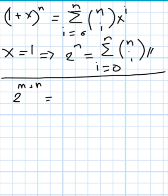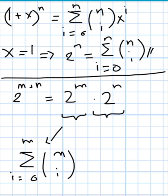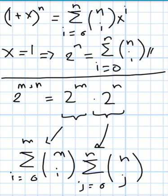The algebraic proof uses this identity. We have 2^(m+n) equals 2^m times 2^n. Now let's expand both sides using the binomial theorem: the left side becomes the sum from i equals 0 to m of m-choose-i, and the right side becomes the sum from j equals 0 to n of n-choose-j.